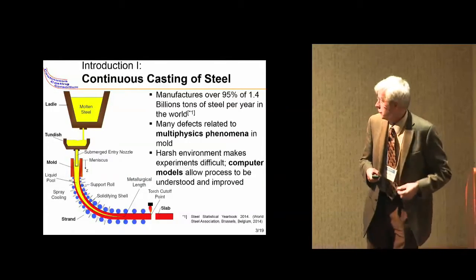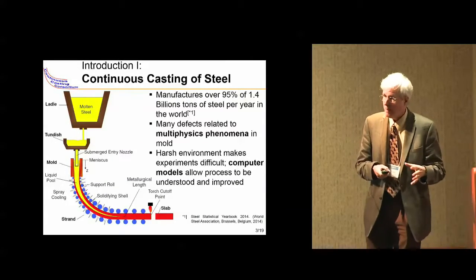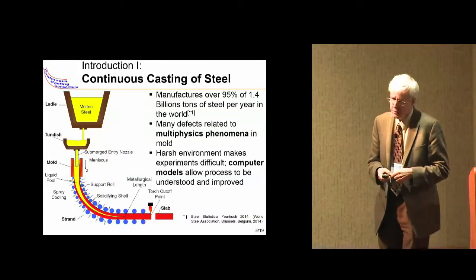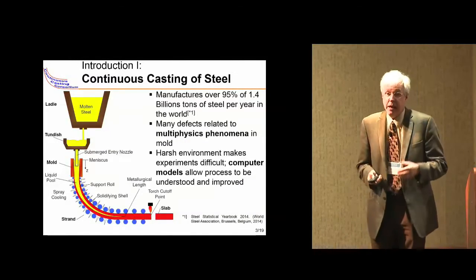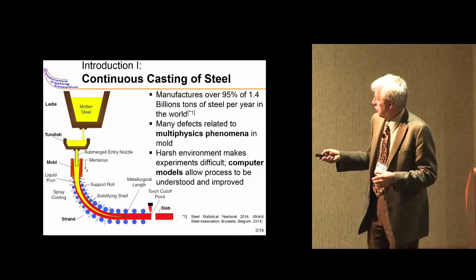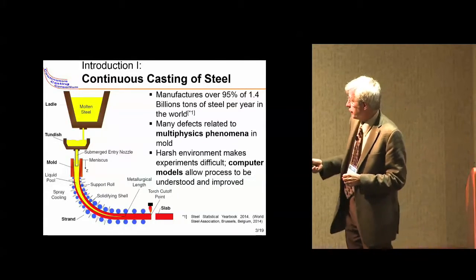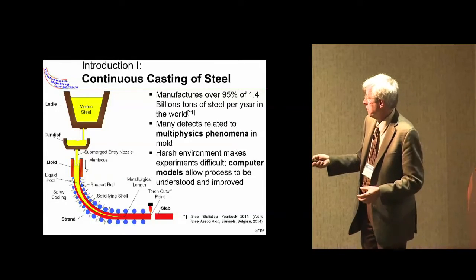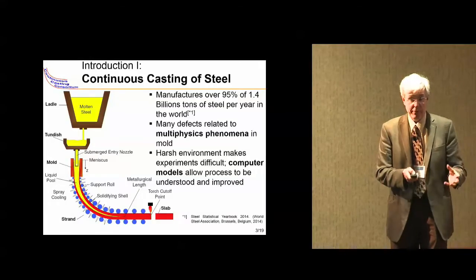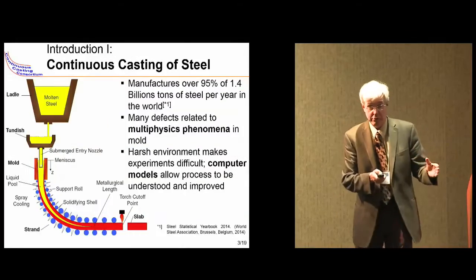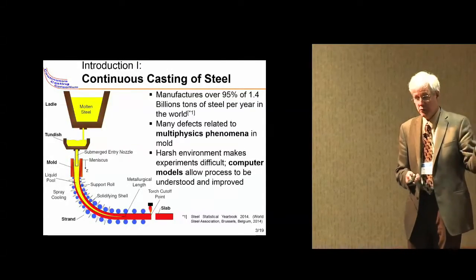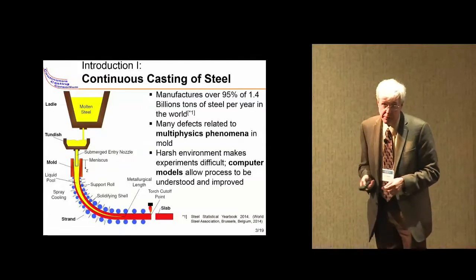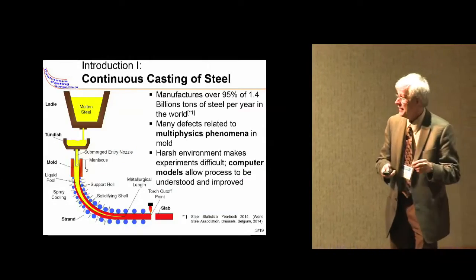A little background: steel continuous casting is the process used to manufacture 95% of the steel in the world, about 1.4 billion tons per year. It involves taking molten metal in a ladle through a tundish, flowing down through a nozzle into a water-cooled bottomless copper mold. It freezes a thin shell against the mold, then is withdrawn by drive rolls while being spray-cooled, eventually becoming solid. You cut it to length and roll it to make sheets for car bodies or refrigerators or bars for beams and buildings.